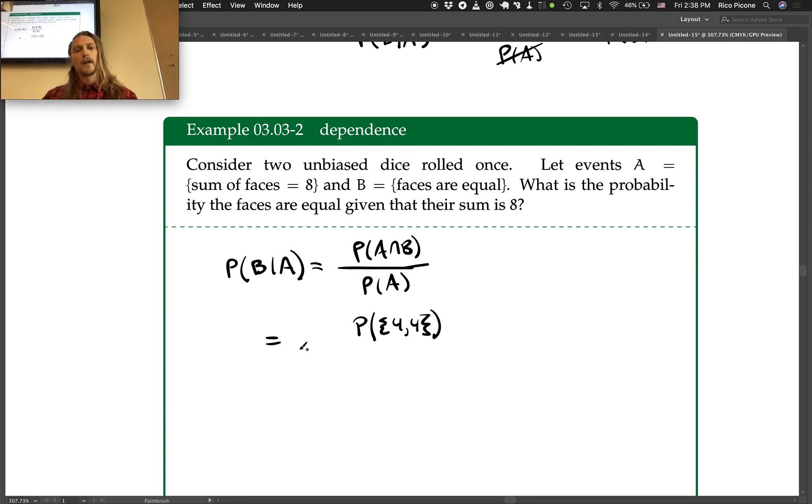Great. And divided by the probability of A, which is that the sum of the faces equals 8. So this is going to be, let's see, this is (6,2)...